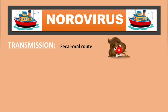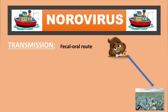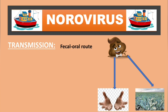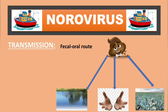If fecal matter gets in contact with our vegetables in the fields, we are at risk. Secondly, if we fail to practice hygiene like washing our hands, we are at risk. This virus can also find its way into water bodies, and if we drink unpurified water or eat shellfish from contaminated water, we can get the Norovirus.